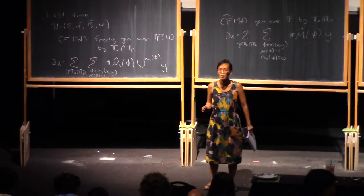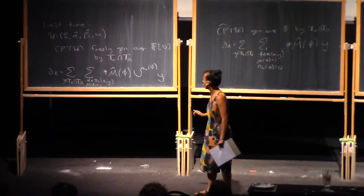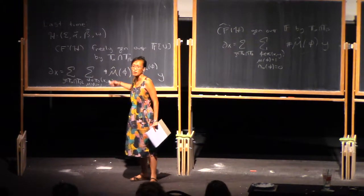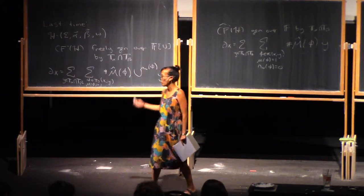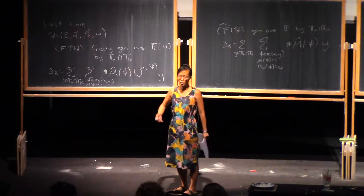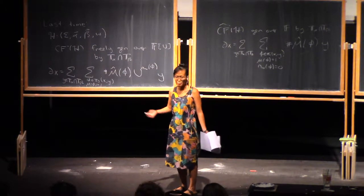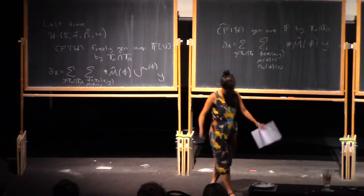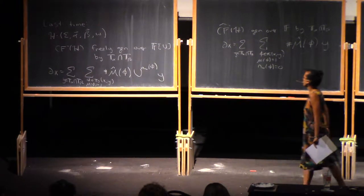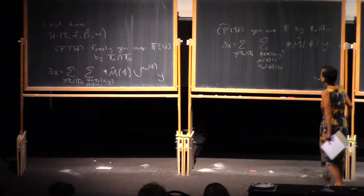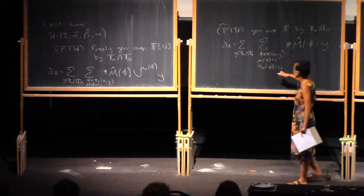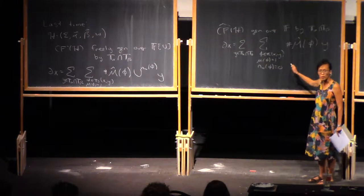The moduli space is a compact zero-dimensional manifold, so we're just counting the points. We're doing everything over the field of two elements, so we're counting mod two and don't need to worry about signs. And then we defined the simpler chain complex CF hat, where we required our disks to miss the base point.